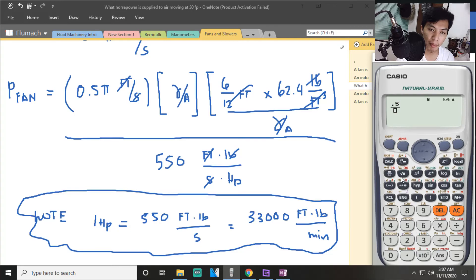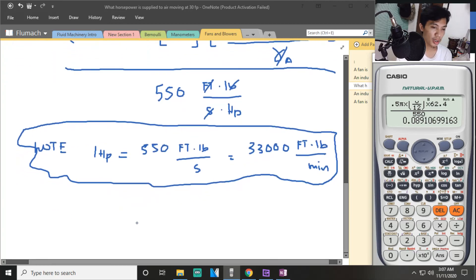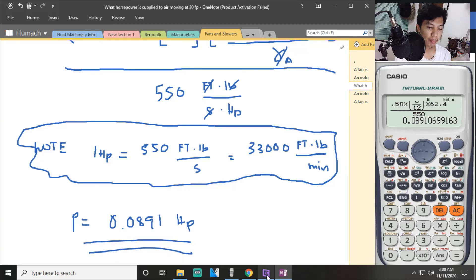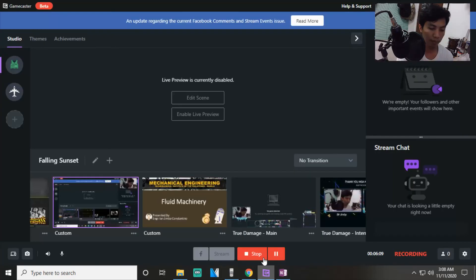So this is 0.5 pi times 6 over 12, one half, times 62.4, divide by 550. The answer is 0.0891. So power is 0.0891 HP. That is for problem number 3.